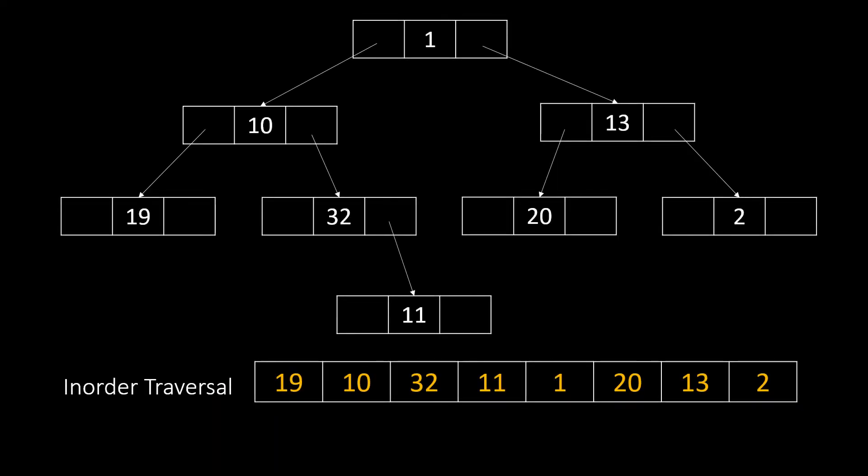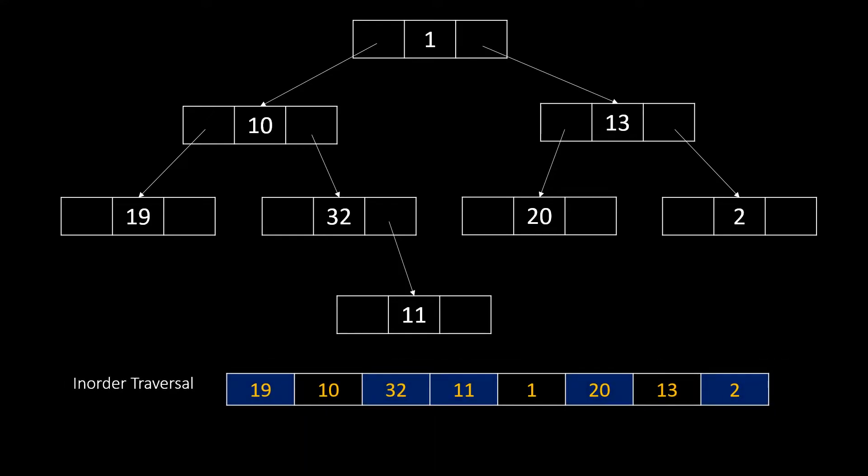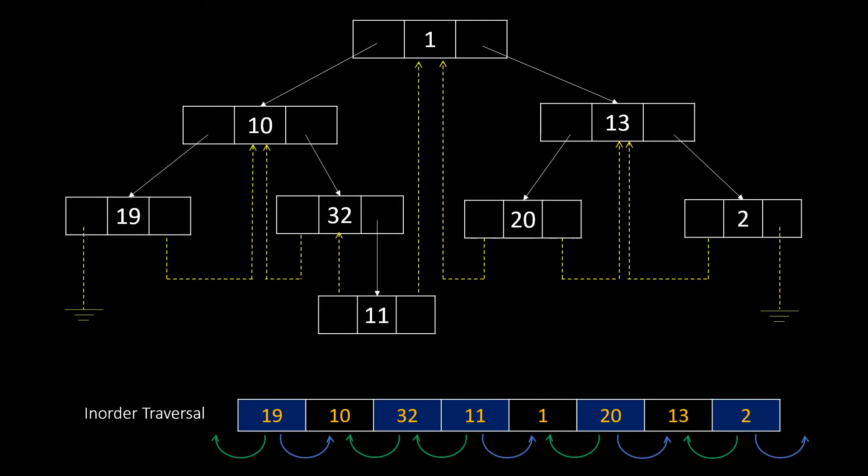For this tree shown here, the inorder traversal is as shown. And the highlighted nodes have either one or two null pointers. So, for these nodes, we will create a thread or a link of left null pointers to inorder predecessor and that of the right to inorder successor. So, this becomes our threaded binary tree.